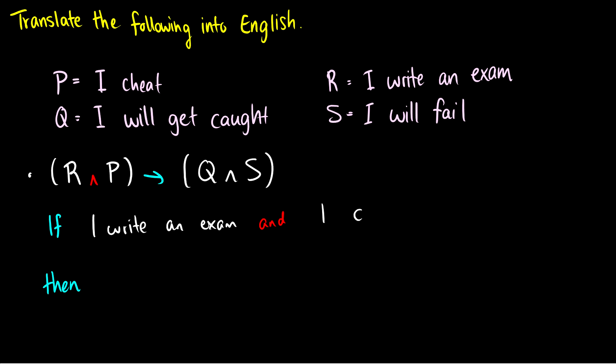And now we have P. So what is P? Well, P is I cheat. So if I write an exam and I cheat, then with the arrow Q. So I will get caught. Then this and, which I'll just rewrite in orange, is also and. Then what is S? S is I will fail. So this well-formed formula, given the key above, translates into if I write an exam and I cheat, then I will get caught and I will fail. And we can kind of see the groupings here. So we can see that R and P are a group together and Q and S is a group together. So if R and P, then Q and S. And all I did was translate this well-formed formula into English, given the keys above.